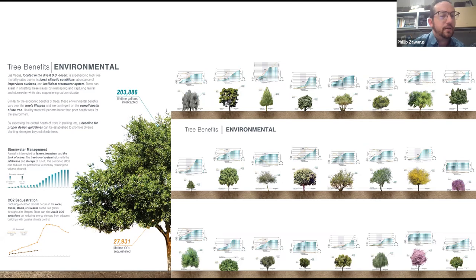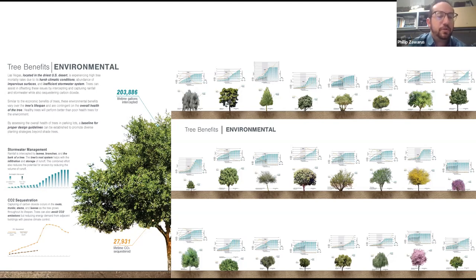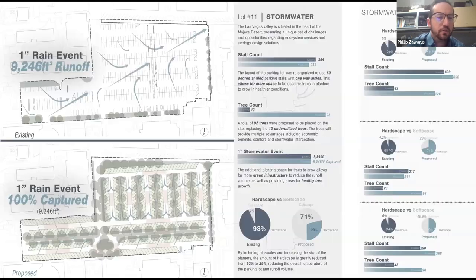The other category we looked at was environmental benefits — how do these trees intercept stormwater runoff and sequester CO2? What's really important is that when you hear about tree benefits, you're often given boilerplate standard metrics. Looking at all these examples, you can see every tree performs a little bit differently, which gives you a better understanding of what trees to use for which situation. There's really no silver bullet tree that could perform and solve all issues — you have to understand what the project needs are.